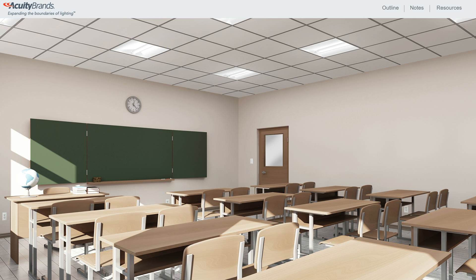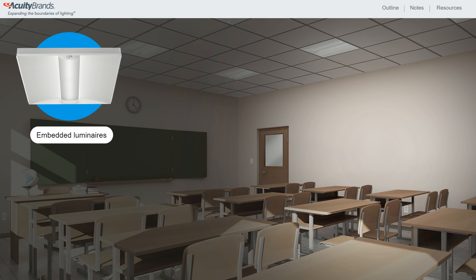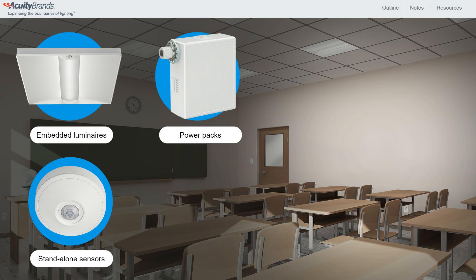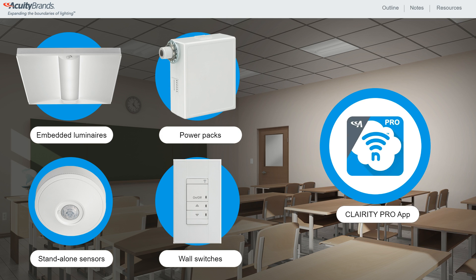After your Enlight Air devices, which consist of embedded luminaires, power packs, stand-alone sensors and wall switches are installed and powered up, download the free Clarity Pro mobile app from the App Store or the Google Play Store to get started.